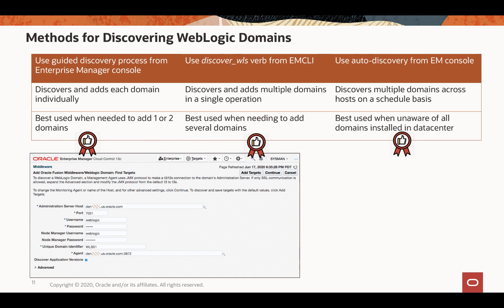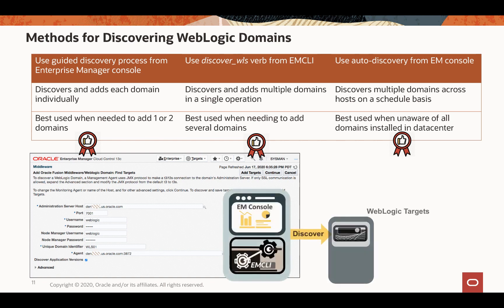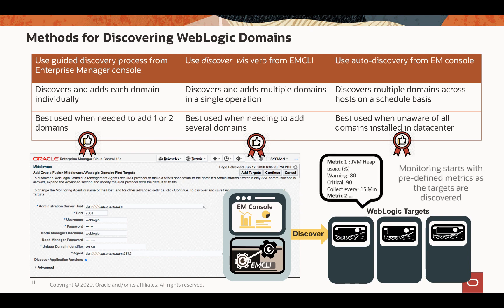The screenshot shows the guided discovery page in Enterprise Manager console. Basically, you fill in the access information to the WebLogic server, such as host name, port, and login credentials, and which agent you want to use. The agent then uses JMX protocol to connect to the WebLogic administration server to discover the targets. Once discovery is done, Enterprise Manager starts monitoring of the WebLogic domain and its member targets using predefined metrics right away.